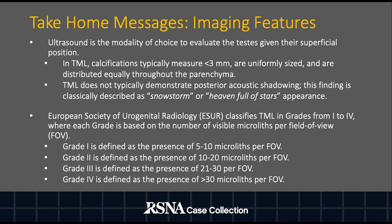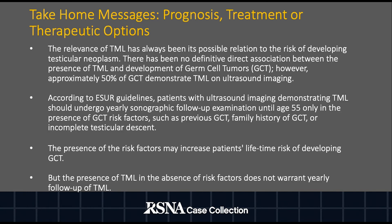The European Society of Urogenital Radiology classifies testicular microlithiasis from grade 1 through 4, with each grade defined by the number of visible microliths per field of view, starting with 5 to 10 microliths. The relevance of testicular microlithiasis is related to its possible relation to the risk of developing testicular neoplasms, such as germ cell tumors. No direct association has been established between the presence of testicular microlithiasis and the development of germ cell tumors. However, approximately half of all germ cell tumors demonstrate testicular microlithiasis on ultrasound imaging.